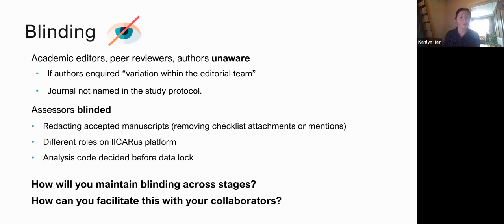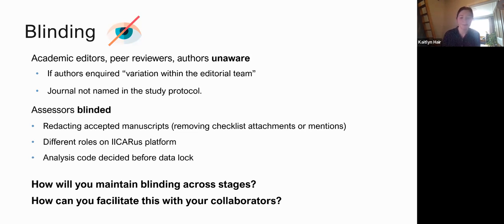We also made sure the analysis code was decided before we locked the database — before revealing the allocation of manuscripts — so the analysis was pre-determined and online before we looked at the data. It's worth spending a lot of time thinking about how to maintain blinding across different stages to reduce risk of bias, and how to facilitate this with your collaborators, because if any of these people were aware of the study it could have had a big impact on results.